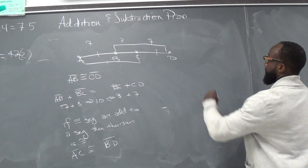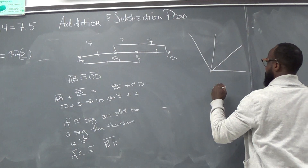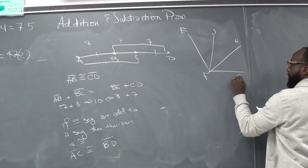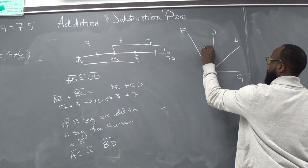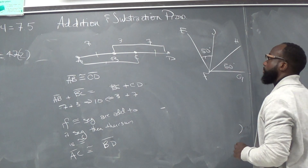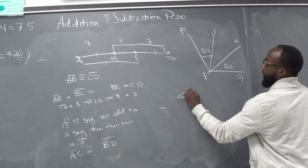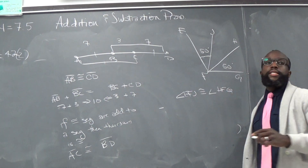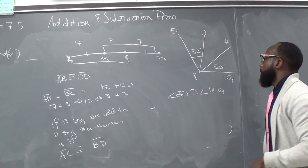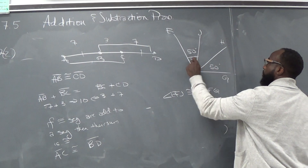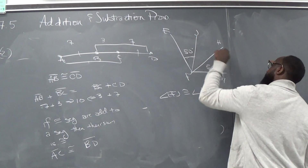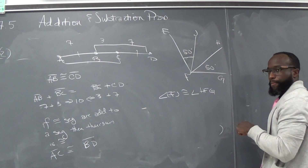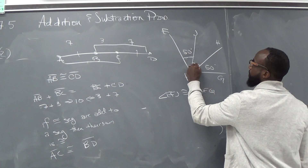Let's look at angles. If I take this angle and I draw three angles inside of it — we're going to call it E, J, H, F, G. If this is 50 degrees and this is 50 degrees, we have angle EFJ is congruent to angle HFG. These two angles are congruent. So if I add JFH to EFJ, and I add JFH to HFG, they're going to be congruent.